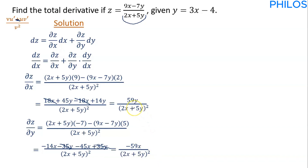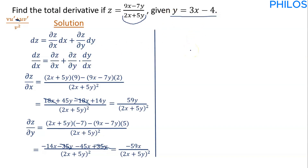Now we are left with dy/dx, which we can get from the given equation y equals 3x minus 4. We use d (not partial) because there is only one independent variable. Differentiating with respect to x: dy/dx equals 3. So now we know partial z partial x, partial z partial y, and dy/dx, and we can substitute into the total derivative formula.